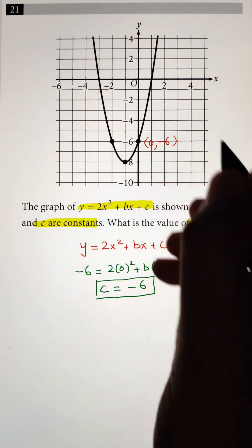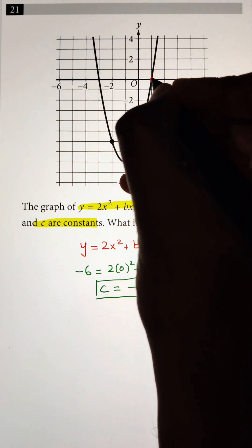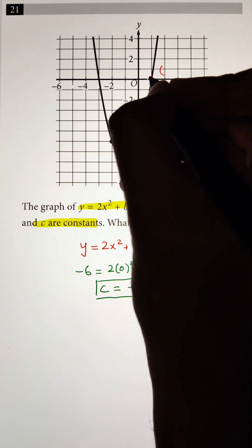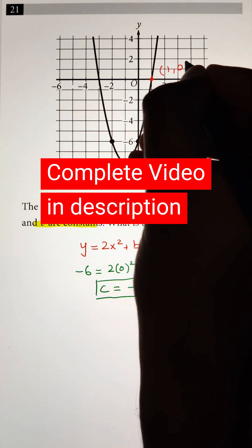So we have one of the constants. In the same way, we can look at another point. Let's look at this one. I have the point coordinates: x is one here and y is zero.